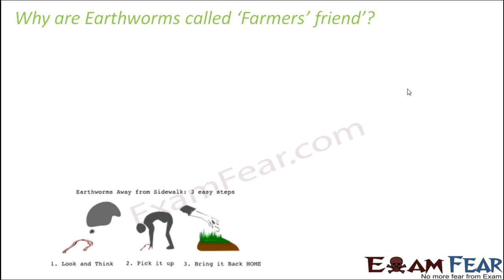With this we have reached the end of our discussion on the morphology and anatomy of earthworms. We observed that earthworms have distinct digestive, respiratory, excretory, and reproductive systems. We also discussed the significance of segments, how they move, and how blood circulation takes place.